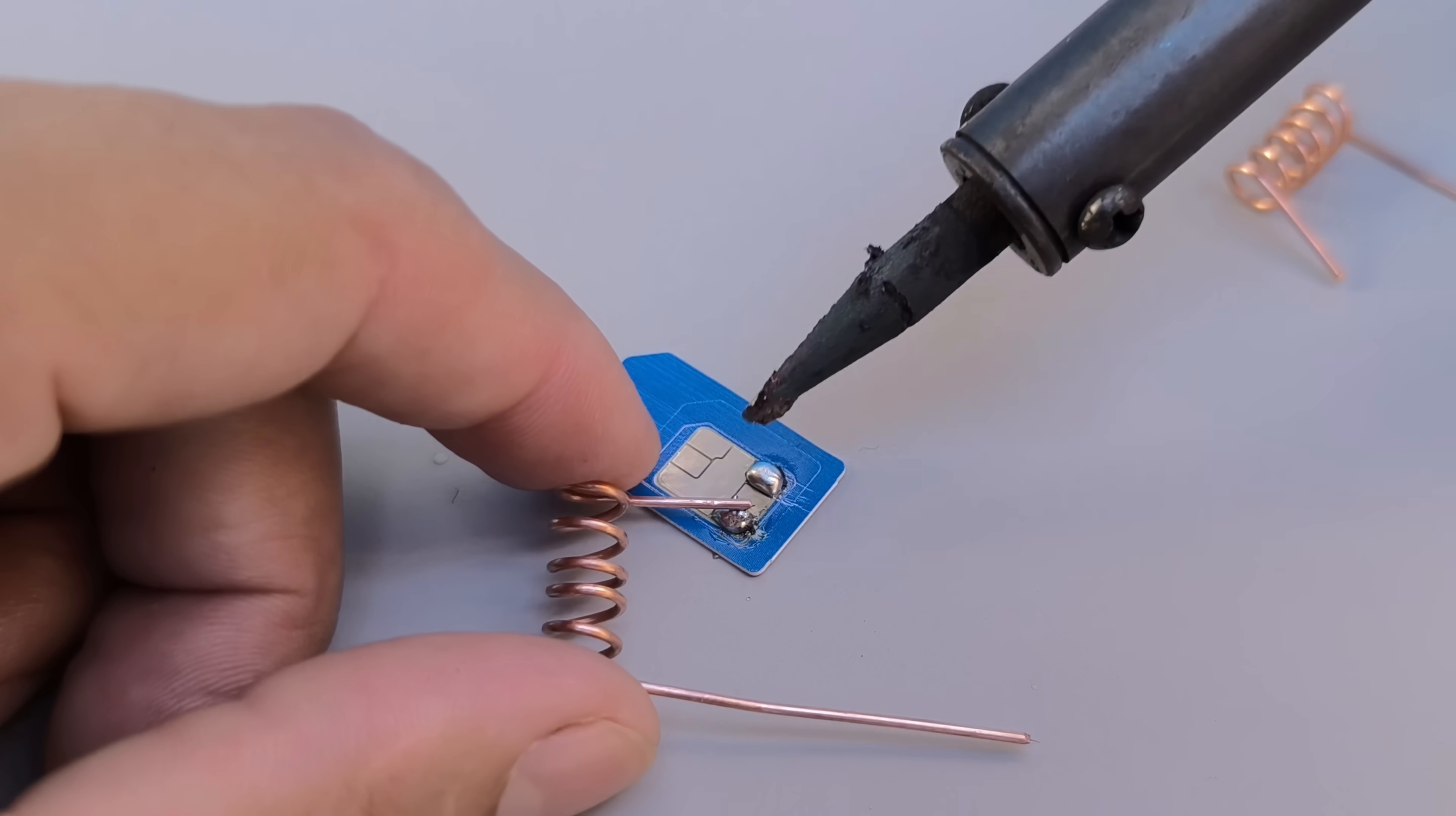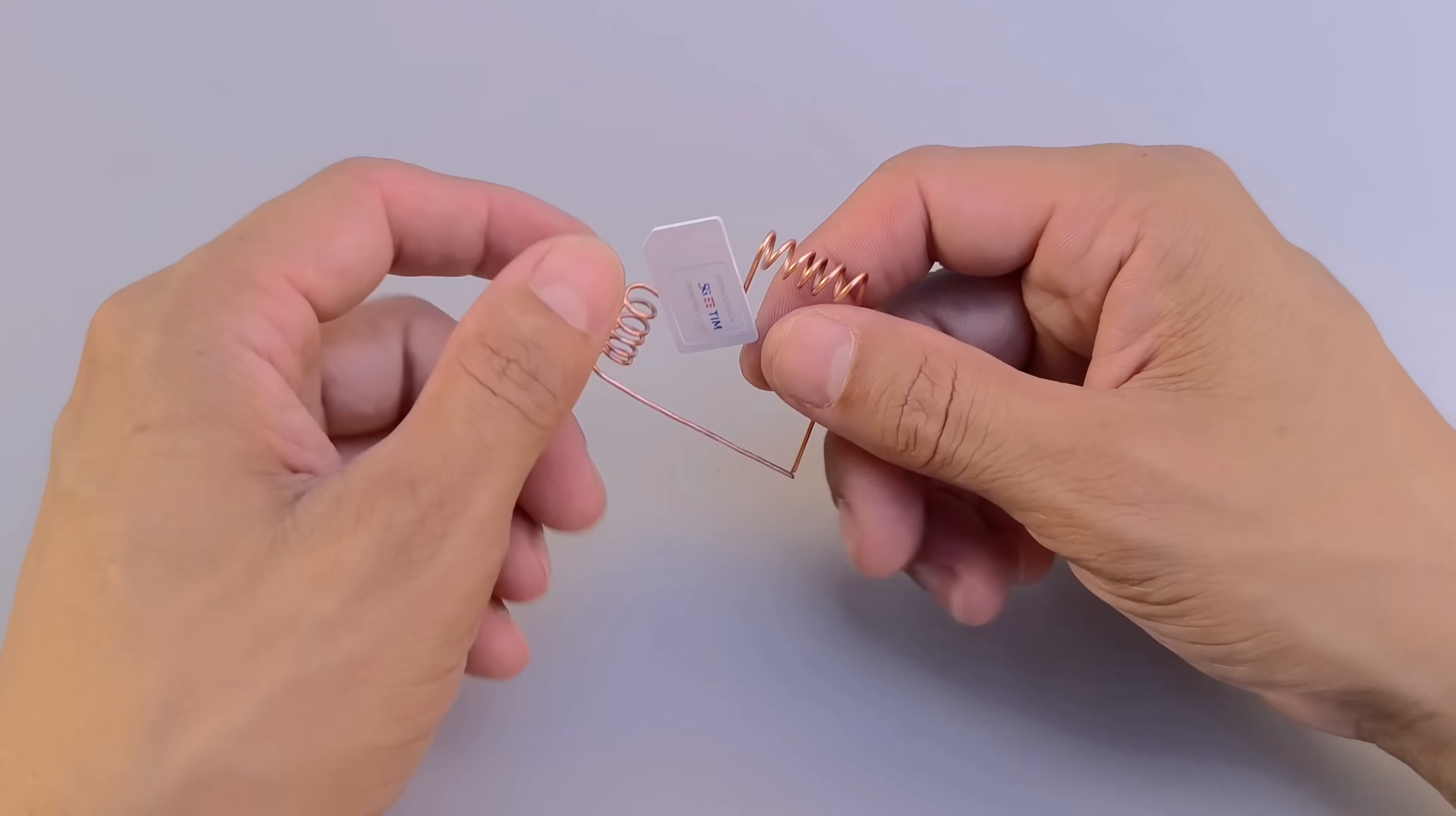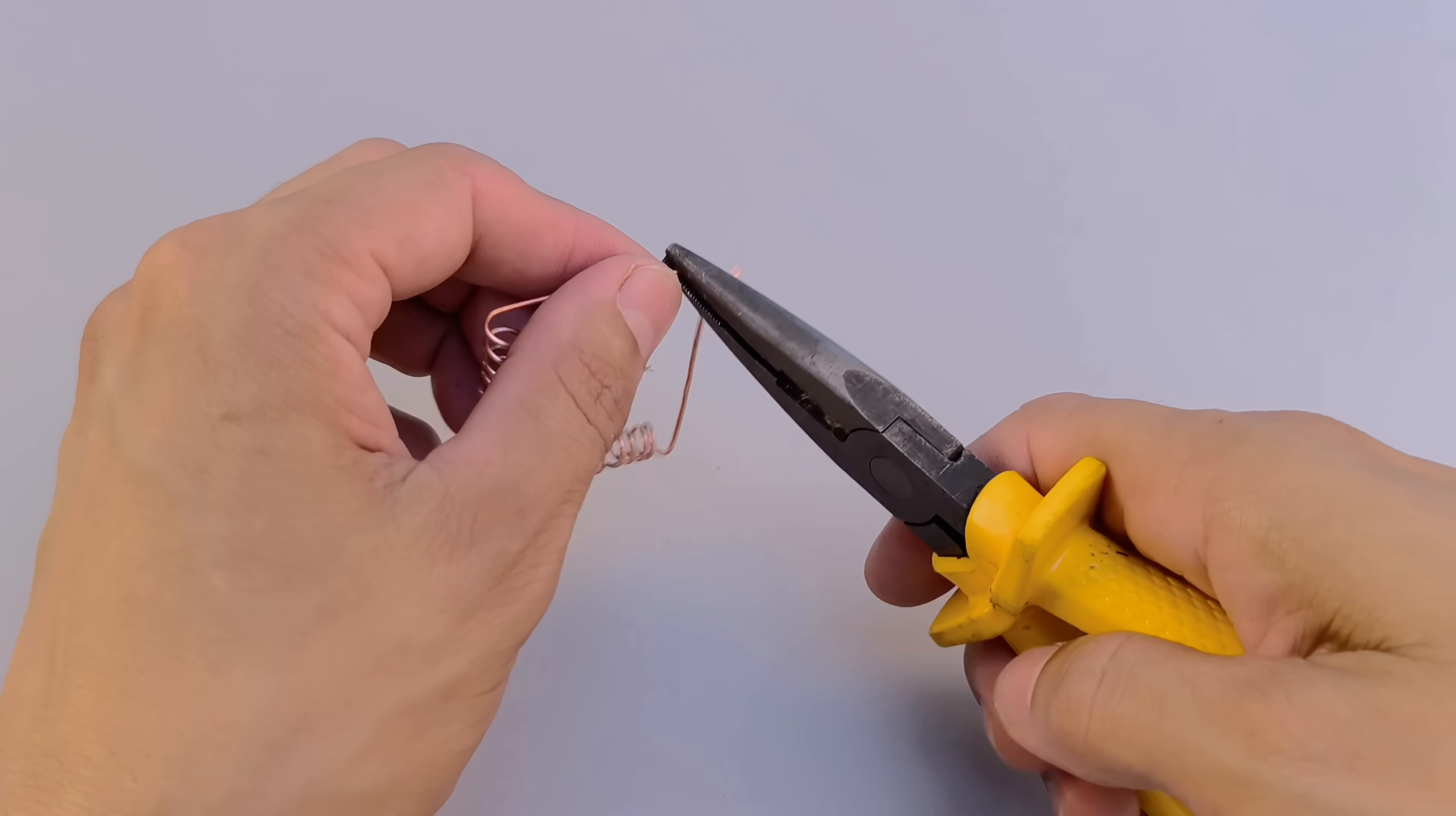Next, solder a coil spring to each of the SIM card pins that were previously stripped, that is, pins 2 and 6. This step requires precision, as the soldering must be firm, without excess, ensuring that the copper wire is well fixed and that current passes through well.